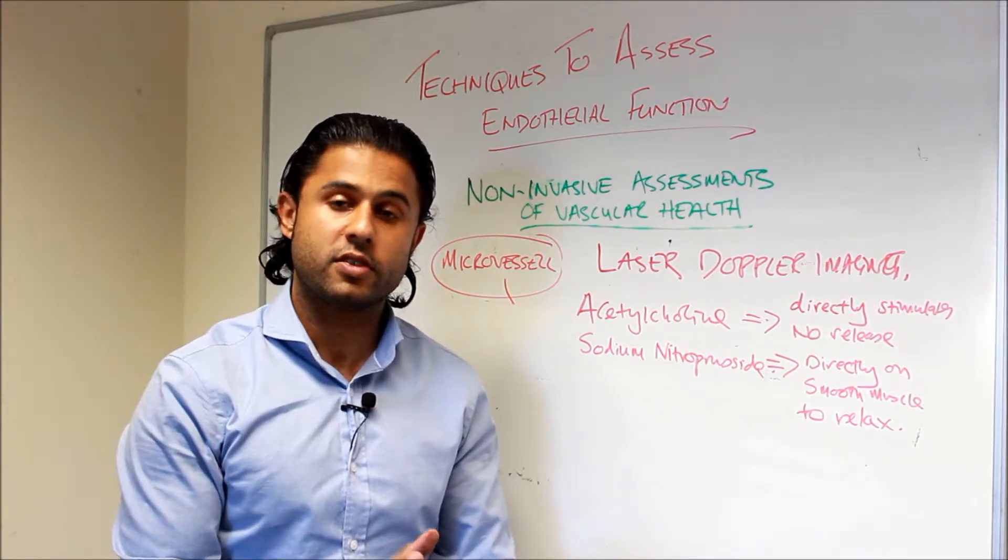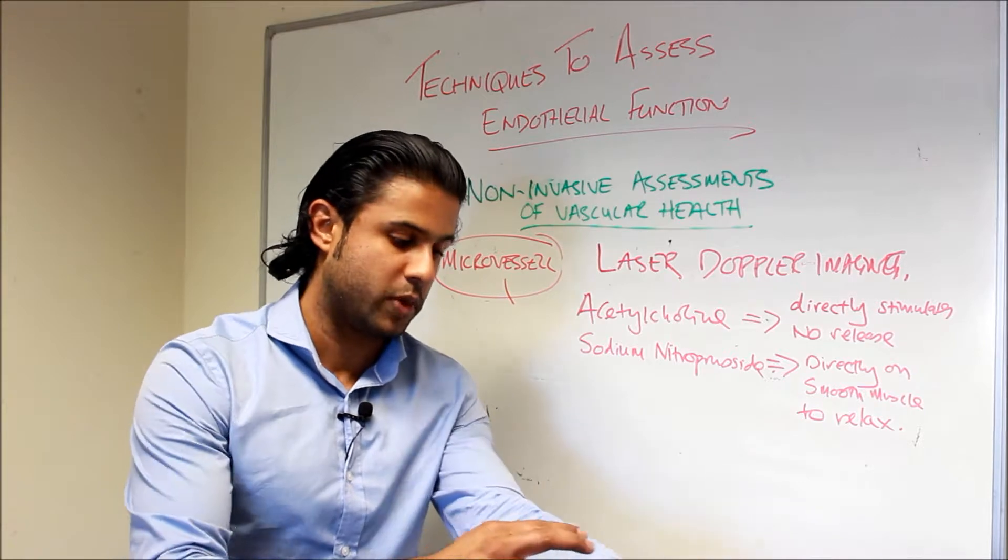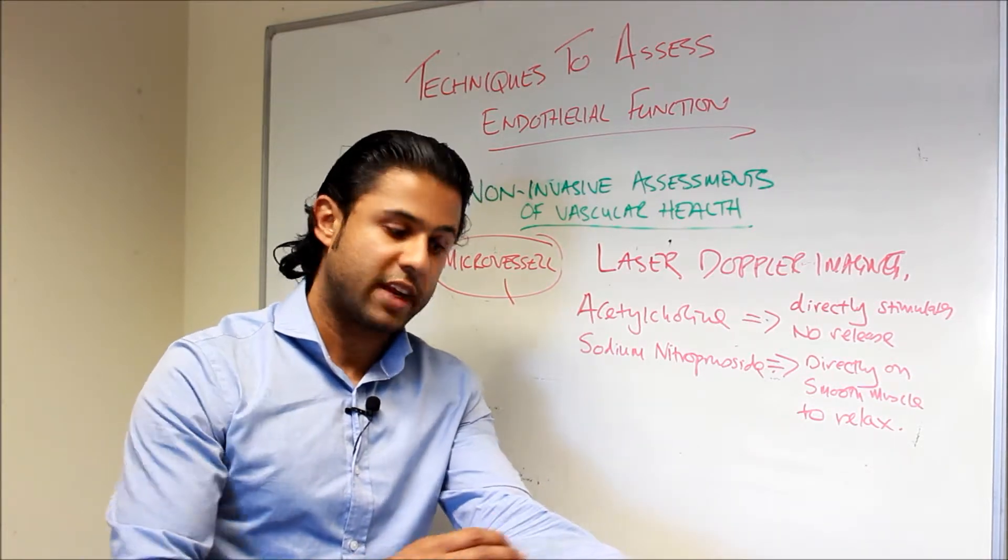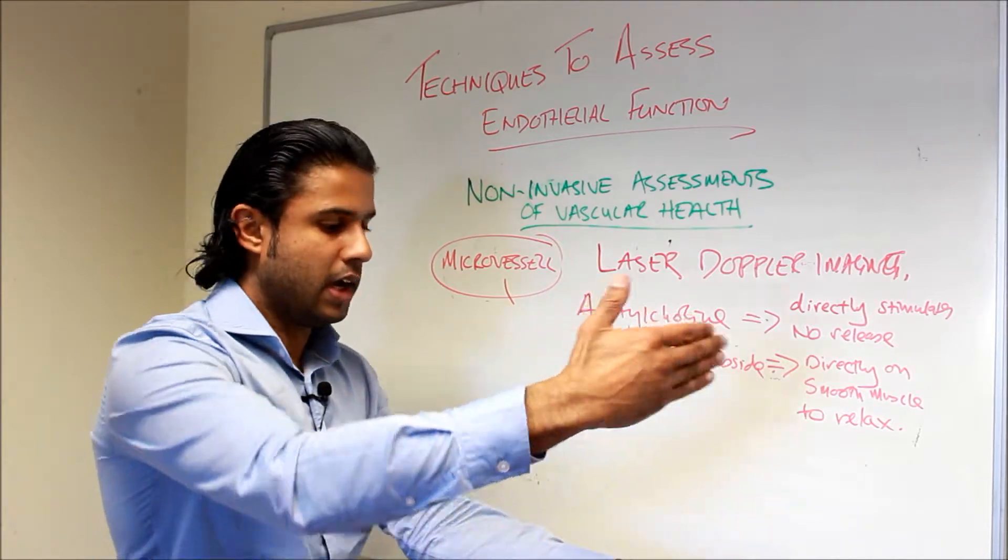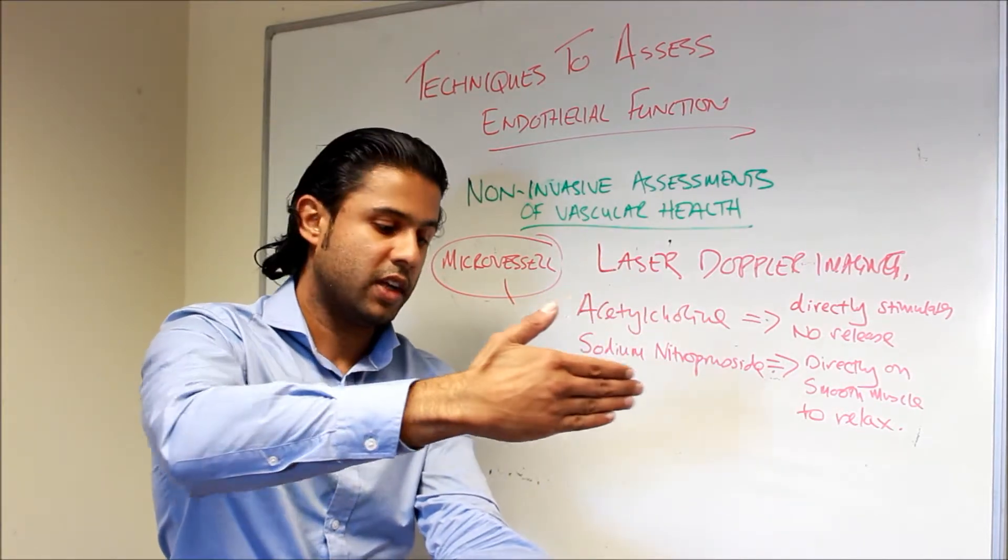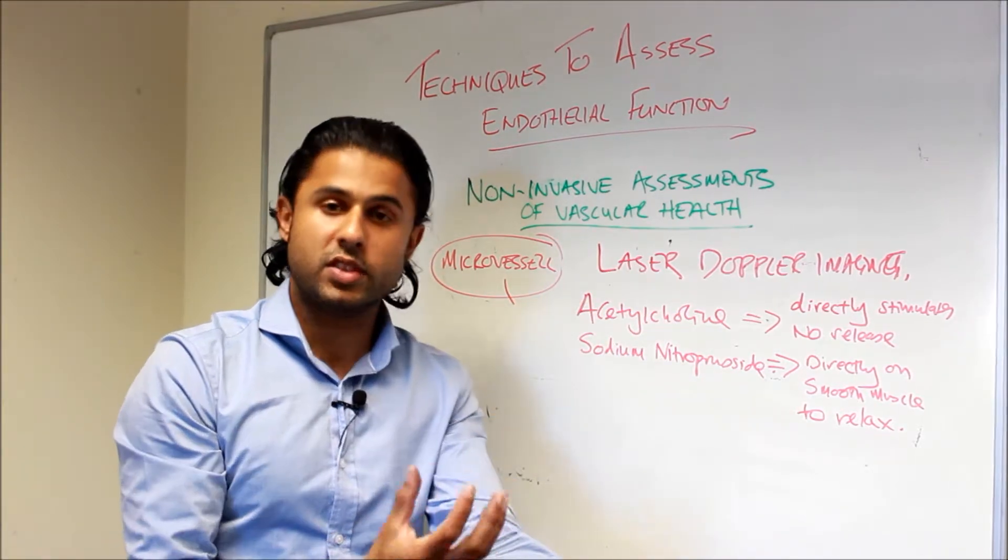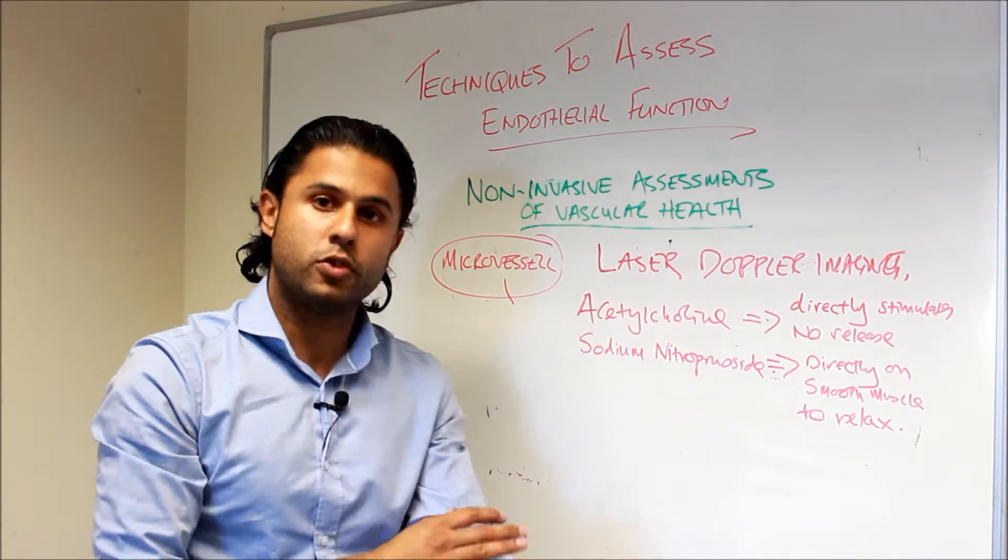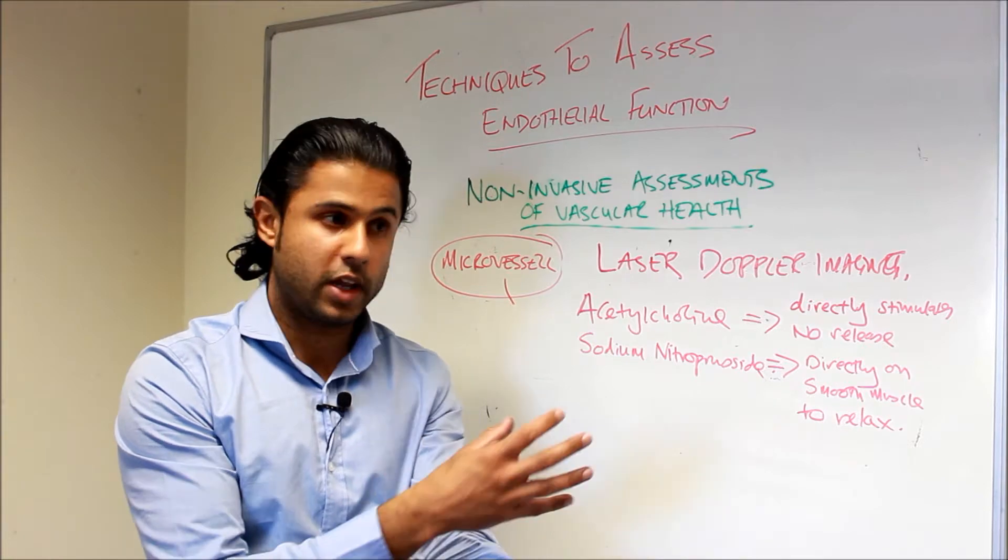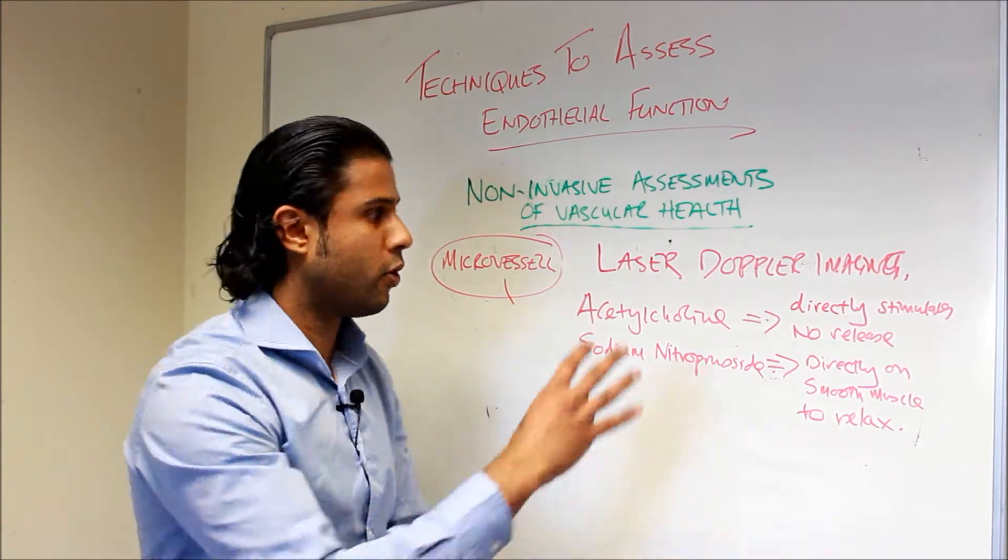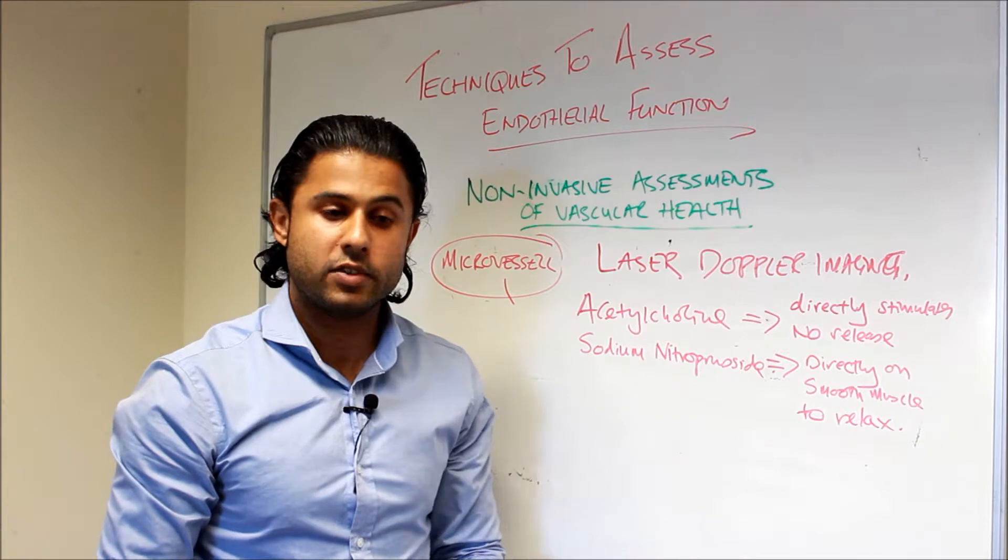These are two agents that are commonly delivered via ionophoresis—a technique which pushes these drugs using an electrical current into the forearm or any part of the body. The laser Doppler scans that part and looks at the changes in blood flow in response to those two agents. As the blood vessels open up, you get an increase in blood flow which we can see mapped out with the laser Doppler imager.